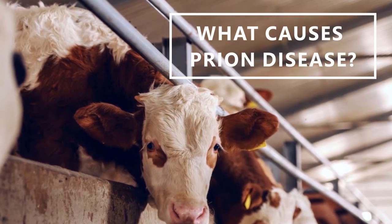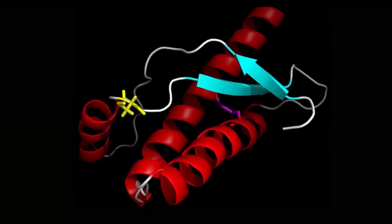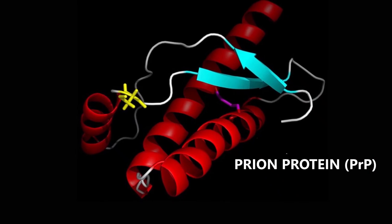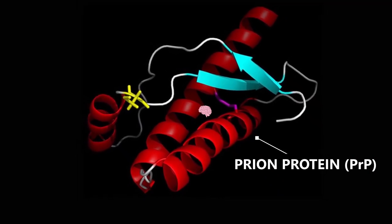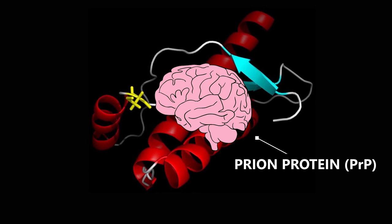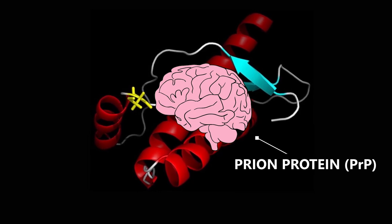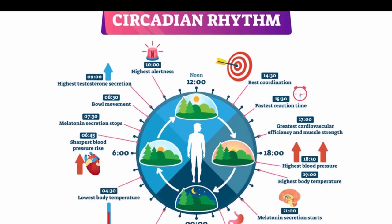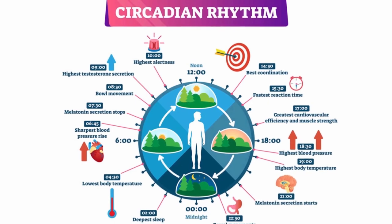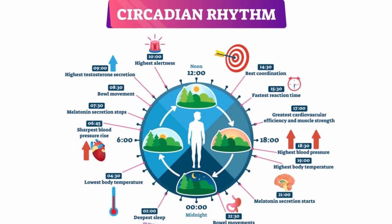What causes prion disease? The disease begins with the prion protein, PRP, which is heavily concentrated in the nervous system on the surface of cells. PRP exists in all humans and is highly conserved between mammals. The function of normal healthy PRP is not yet known, but it may be involved in memory, the circadian rhythm, and sleep-waking cycles.